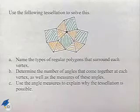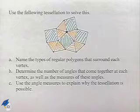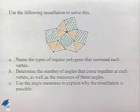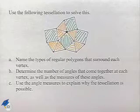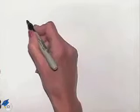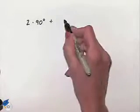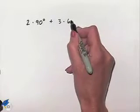Now, for part C, we're supposed to use the measure angles to explain why the tessellation is possible. And so we're going to use the fact that we have two times 90 degrees plus three times 60 degrees.